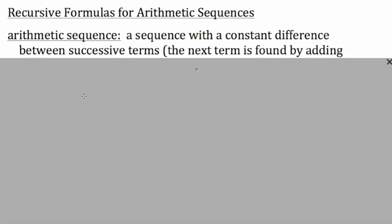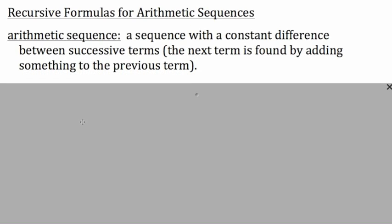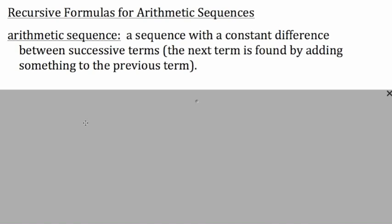Let's begin by defining an arithmetic sequence. An arithmetic sequence is a sequence with a constant difference between successive terms. In other words, the next term is found by adding something to the previous term. So with an arithmetic sequence, to find the next term, you're simply going to add something to the term that you're on, and that will give you the next term.